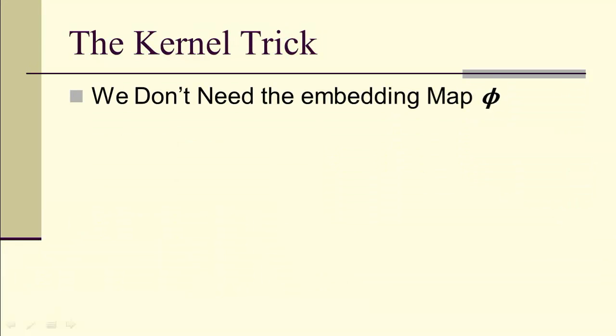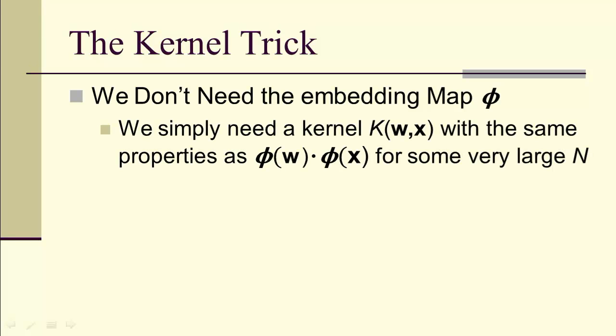Notice that our capital K here is in place of where the inner products were. So, the kernel trick is, if we do this, we don't need the mapping phi. We simply need a kernel that has the same properties as phi(w) dot phi(x) for some extremely large value of capital N. In other words, we have to have K(w,x) equals K(x,w) and K(w,w) greater than or equal to 0.